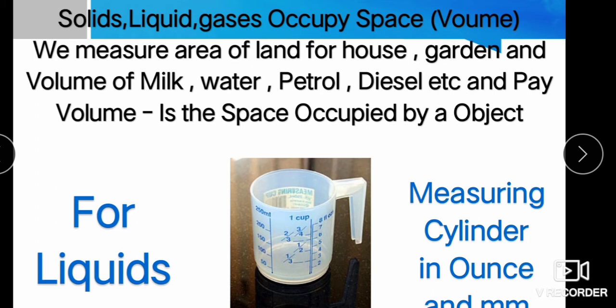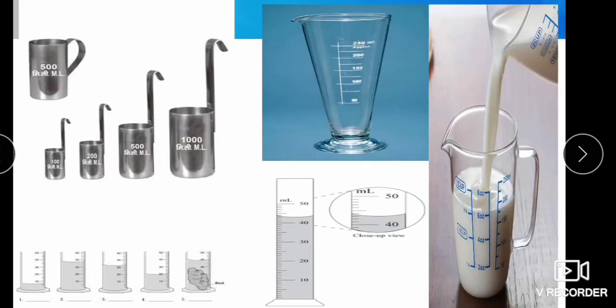Like meter, kg, and second, the unit for measuring the volume of liquid is ounce. Different instruments are shown to measure volume. This is the pharmaceutical flask used in pharmacy and the medical field for medicines production to measure the volume of chemicals. These are measuring beakers used by milk vendors to measure milk, and sometimes petrol or kerosene.